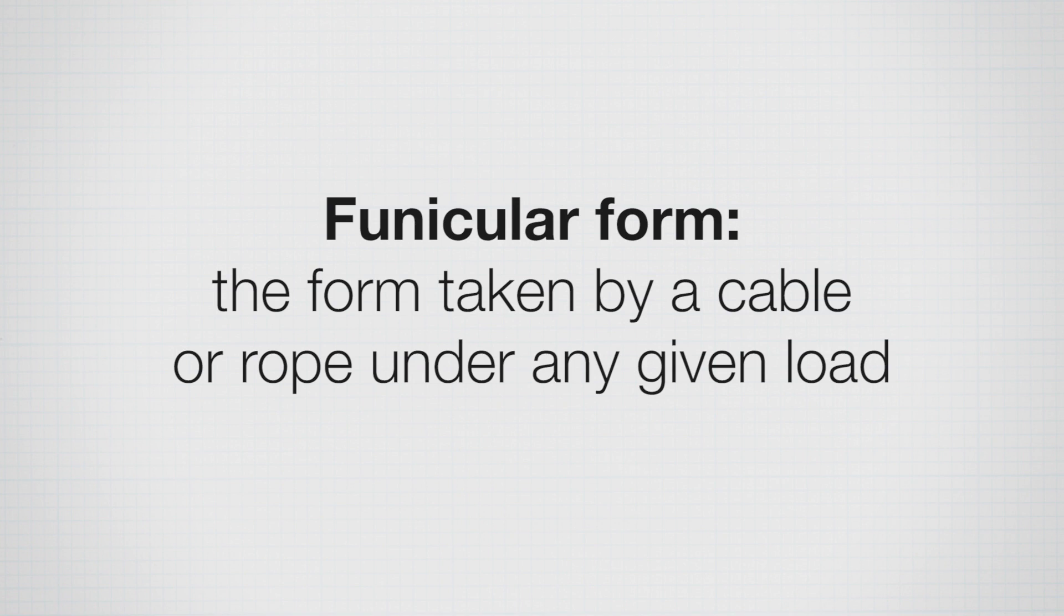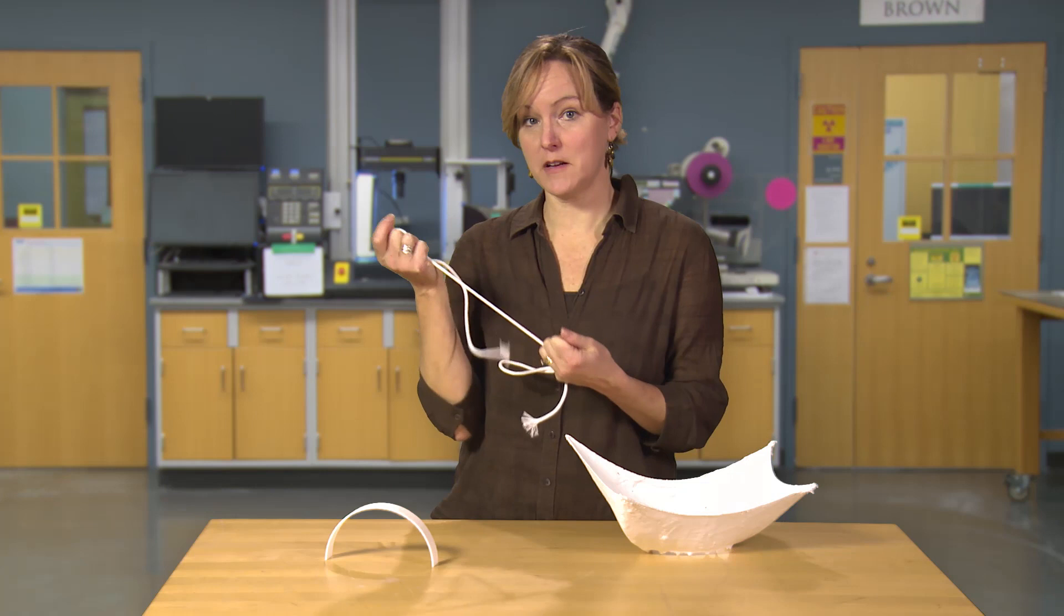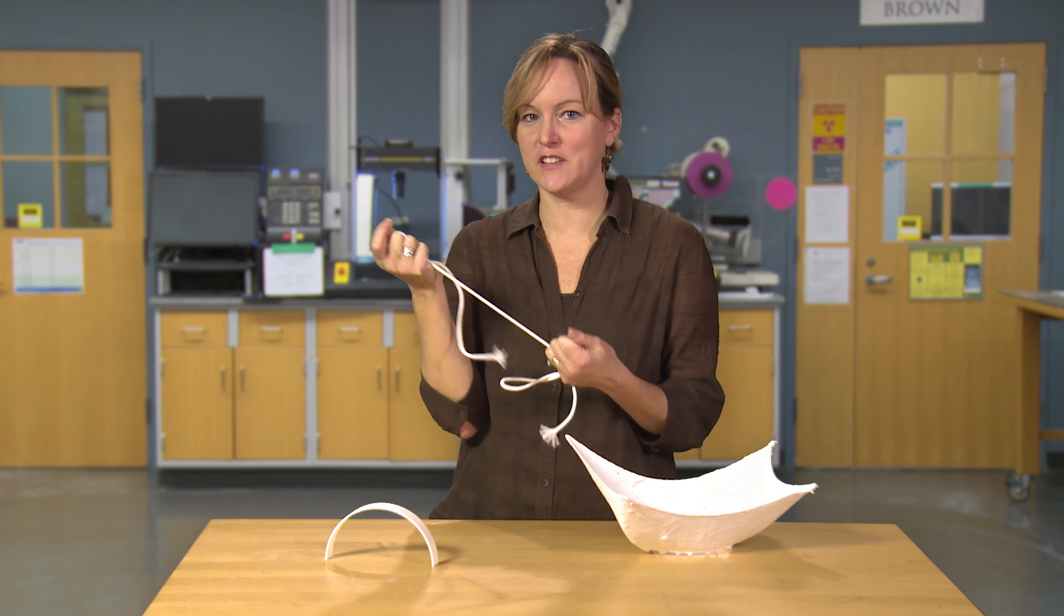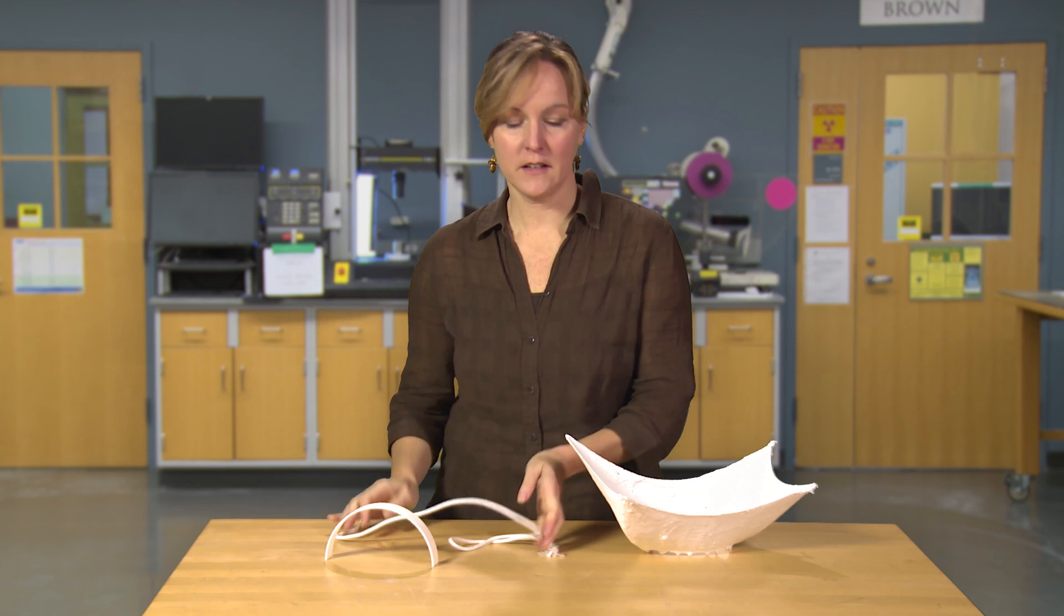A funicular form is a form taken by a cable or a rope for a given loading. Because a funicular form is made out of rope or cable-like structures or elements, the funicular form is all in tension. You can't push on a rope, you can only pull on a rope, so that's why a funicular form will be in tension.